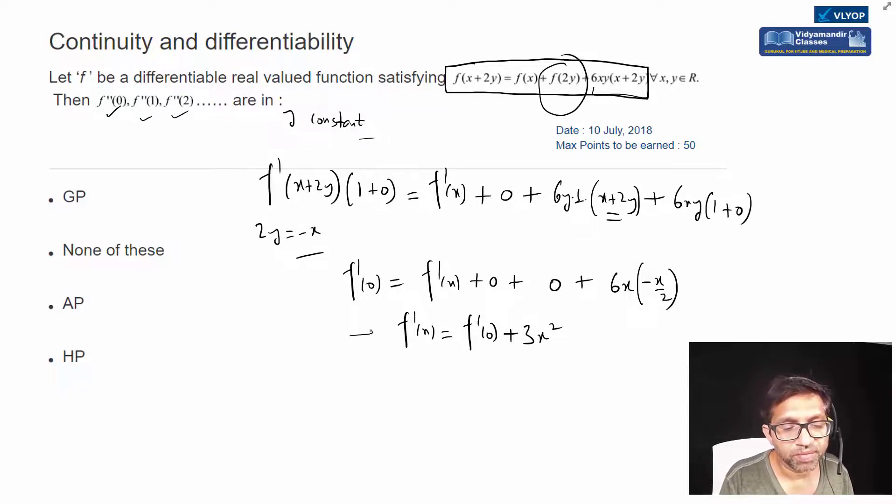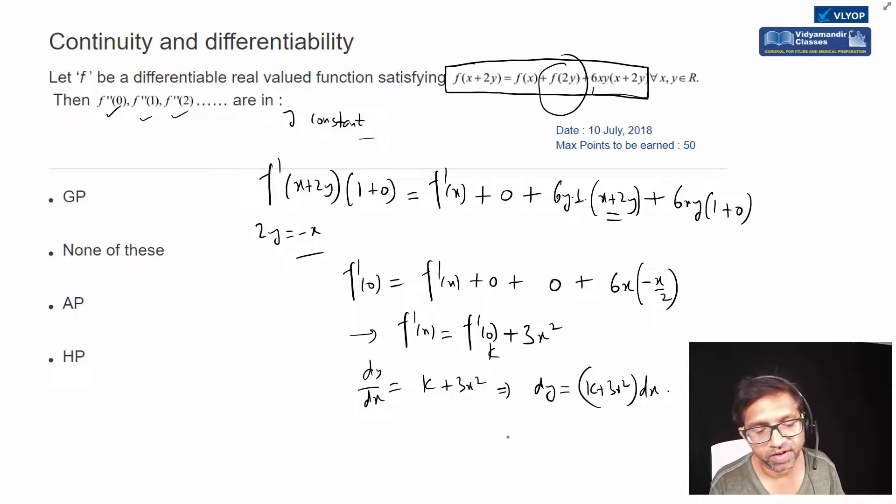This is what we do - this is differential equation, there's a relationship between x and y. dy/dx equals k plus 3x². This implies dy equals k plus 3x² into dx. So this will become y and this will become kx plus x³ plus constant of integration k'.